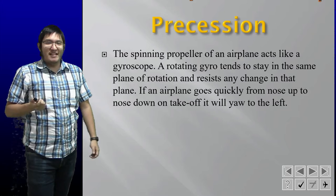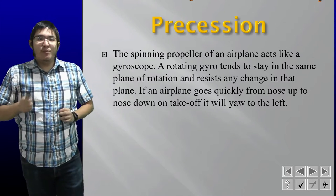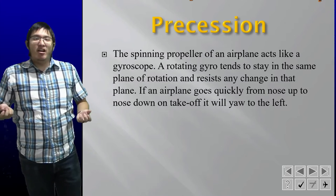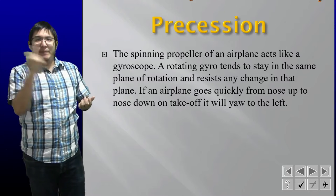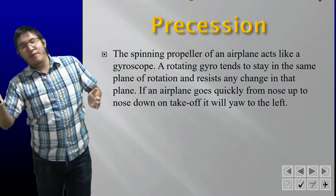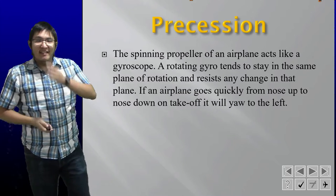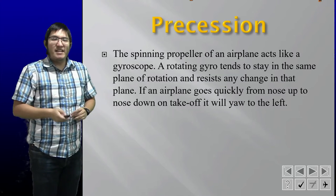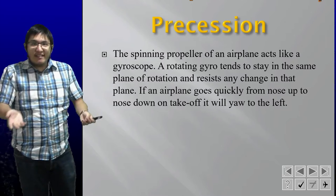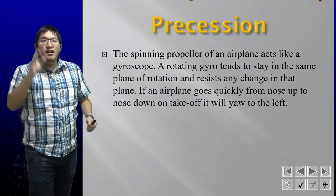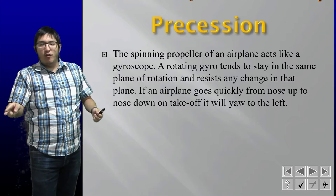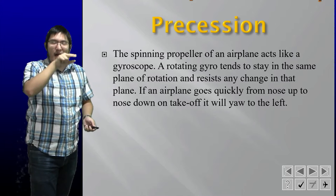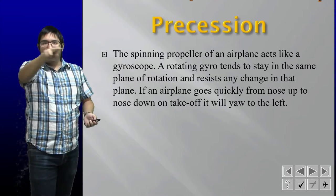Alright, gyroscopic precession. A spinning propeller tends to act like a gyroscope. A rotating gyro will tend to stay in the same plane of rotation — if it's spinning upright, the gyroscope will keep spinning upright. What happens in precession is: if we apply a force on the propeller, that force will act 90 degrees down the direction of rotation rather than where it was applied.